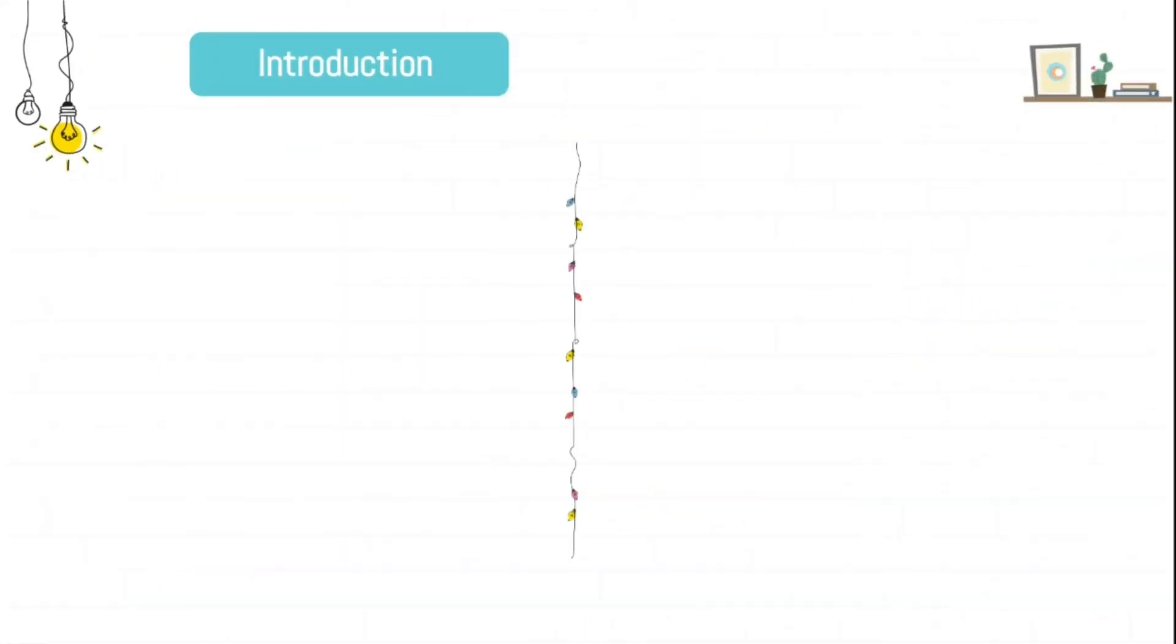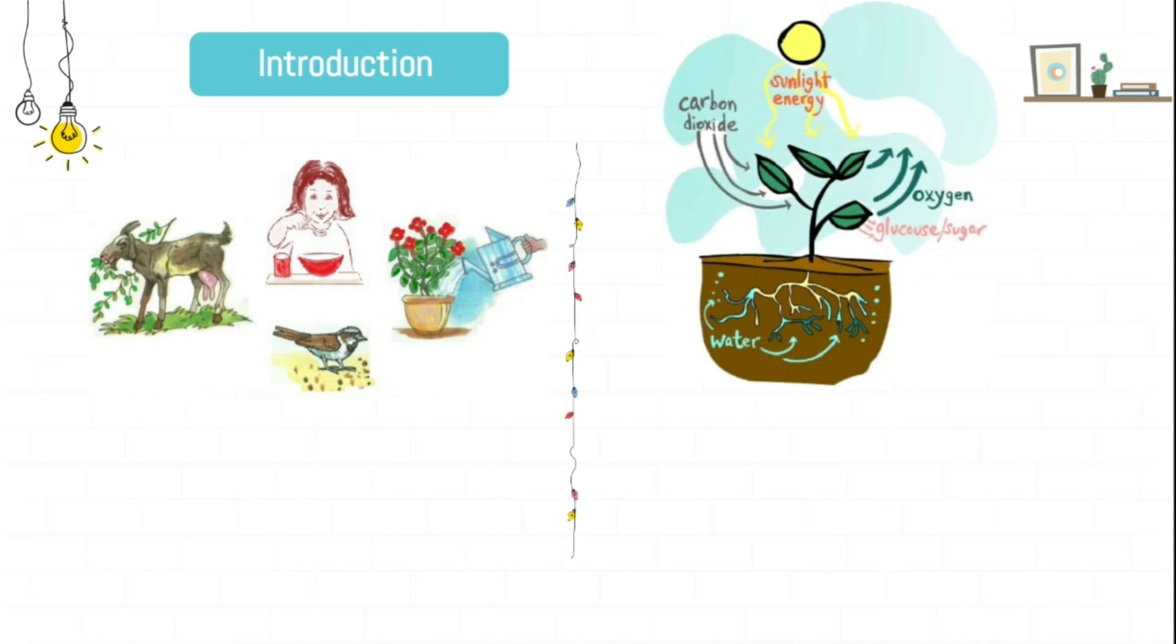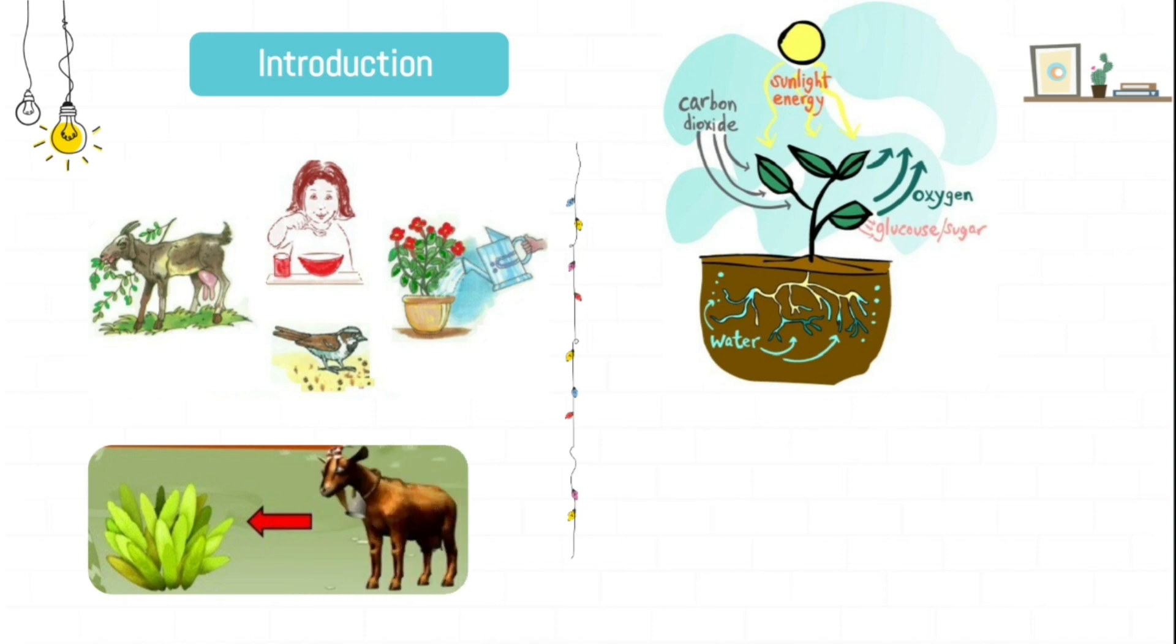Let us have a quick introduction to this topic. We all need food and we know that plants can produce their own food by the process of photosynthesis. Animals depend upon plants for their food and we human beings also depend upon plants for our food.